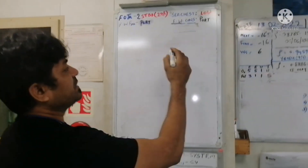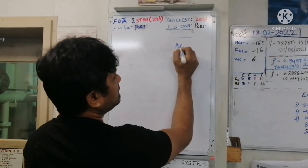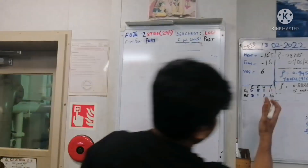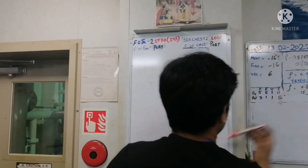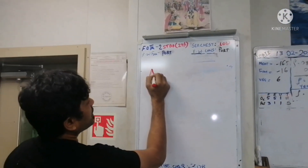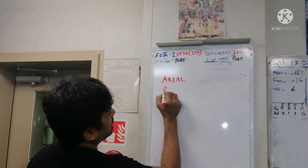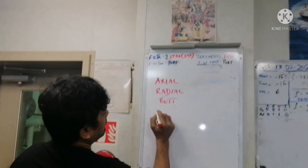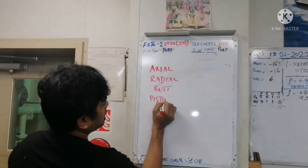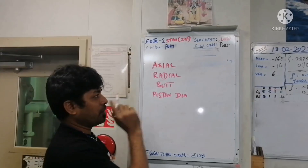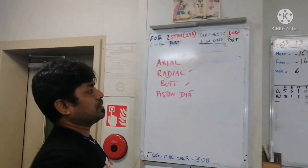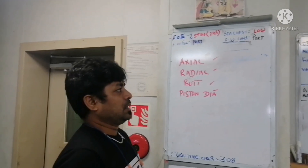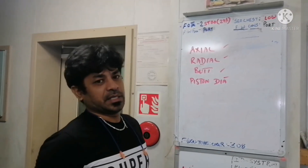The four measurements we need to take are: axial, radial, butt, and piston diameter. So these are all the four measurements you need to take when you do the calibration of your generator piston or main engine piston.